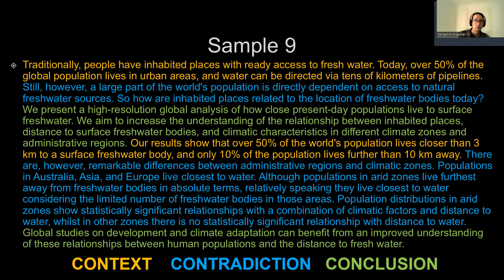In the stacked CCC structure, you have one context-contradiction-conclusion that gives the context, an interesting contradiction that goes against that context, and finally a conclusion like 'therefore we analyzed X, Y, Z.' Then in the second CCC, it's focused on the results and basically states: 'we found X, but we also found Y, which contradicted it, therefore Z.' A long abstract where you can fit in two CCCs is perfectly welcome.